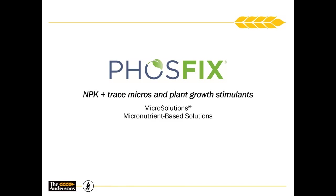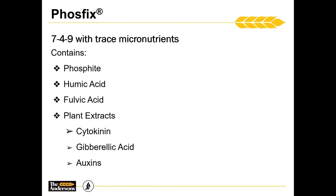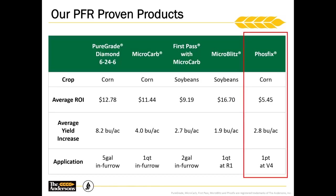Next, we have Phosphix. Phosphix is a 7-4-9 with trace micronutrients, and it has a lot of components to it. It's an extremely dynamic product that works really well in your system. First, we have phosphite, which has fungicidal properties to help increase your overall plant health. Then we have our humic and fulvic acid — the plants recognize these, increase nutrient receptivity into the crop, and help bring everything in. Finally, we have our plant extracts — plant growth regulators including cytokinins, gibberellic acids, and auxins. The three of those help increase cell elongation, cell differentiation, and cell division, increasing overall plant health and plant stress recovery.